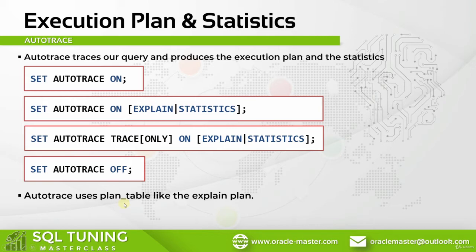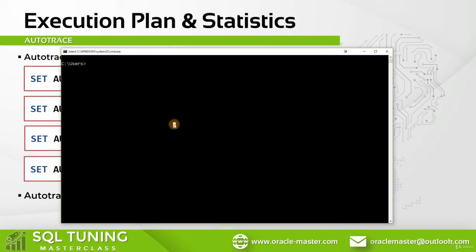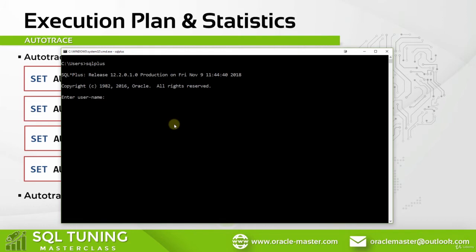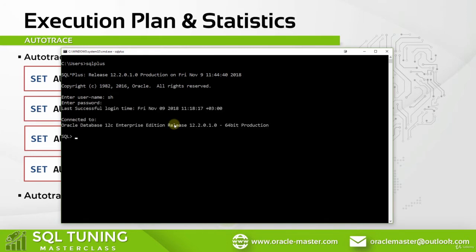Now let's open up SQL*Plus and make our examples. Let's connect with the SH user — type SH and press Enter; the password is SH2. Now let's start with the TRACEONLY EXPLAIN command. We simply type 'SET AUTOTRACE TRACEONLY EXPLAIN' and run it. If no errors are returned, that means it has succeeded. When we run a query now, the server traces our code and writes the explain plan into the plan table.